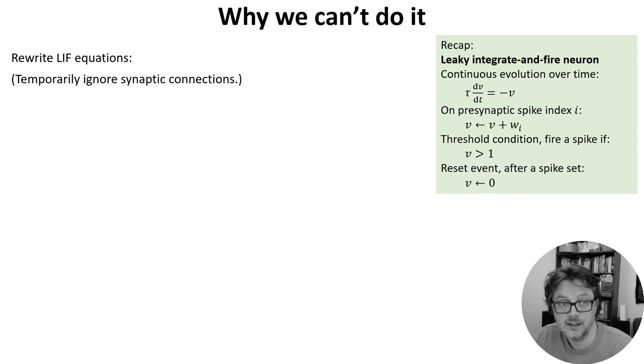The threshold we'll write as S(t), and that's the Heaviside function of v(t) - 1. So this will be equal to one if the neuron has spiked, otherwise zero.